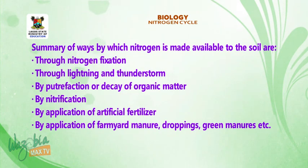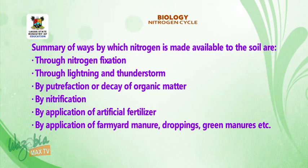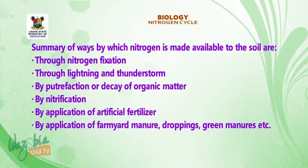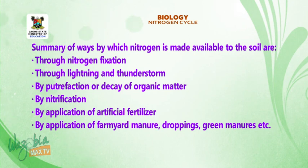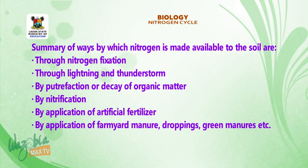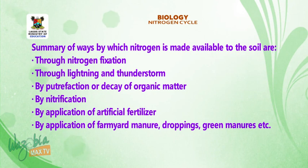Summary of ways by which nitrogen is made available to soil: through nitrogen fixation, through lightning and thunderstorms, by putrefaction or decay of organic matter, by nitrification, by application of artificial fertilizer, and by application of farmyard manure, droppings and green manure.